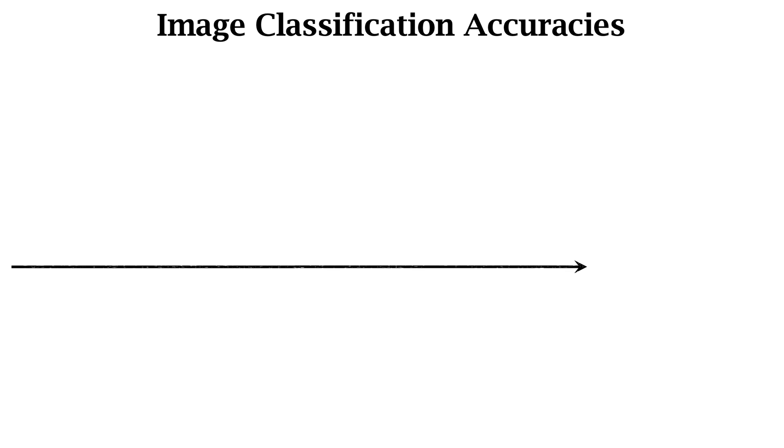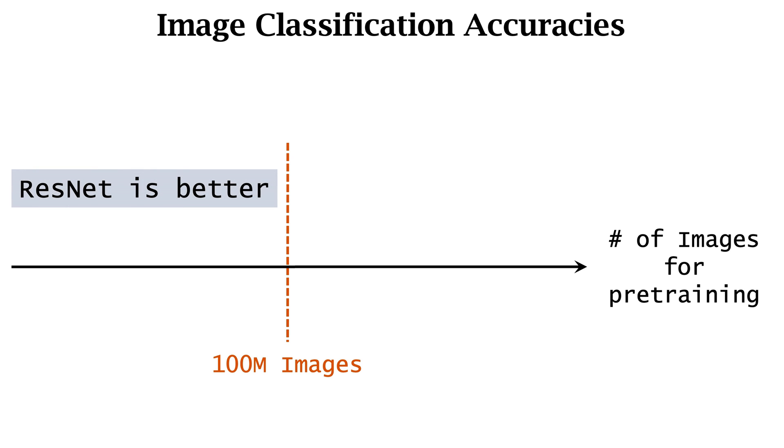The experiments indicate that Transformer requires very large data for pre-training. The bigger the pre-training dataset, the greater the advantage of Transformer over ResNet. If the datasets for pre-training has less than 100 million images, Transformer is worse than ResNet. When the dataset has over 100 million images, Transformer is better than ResNet.